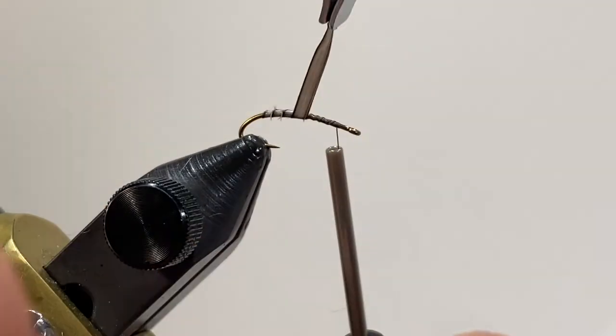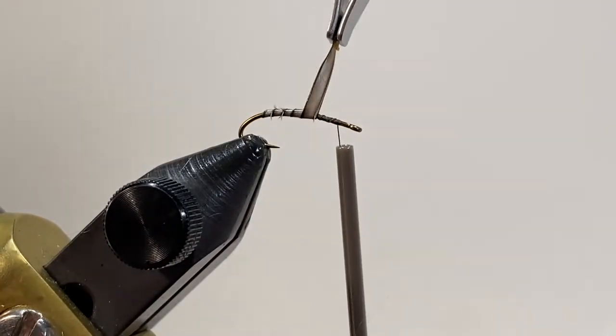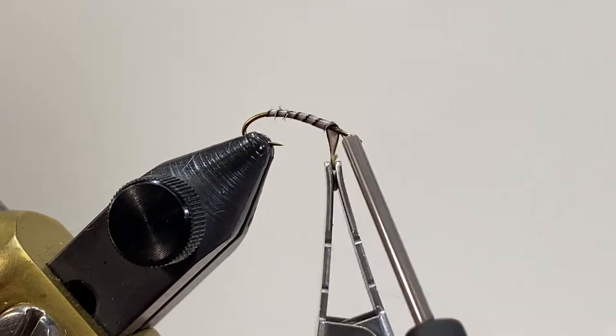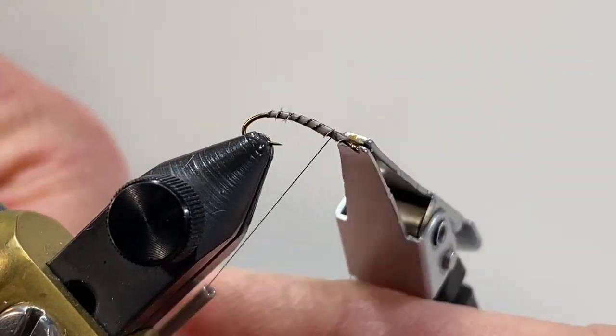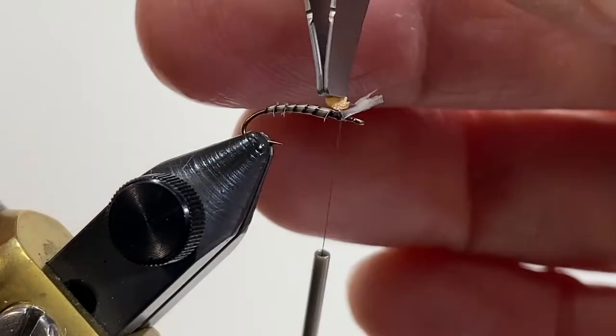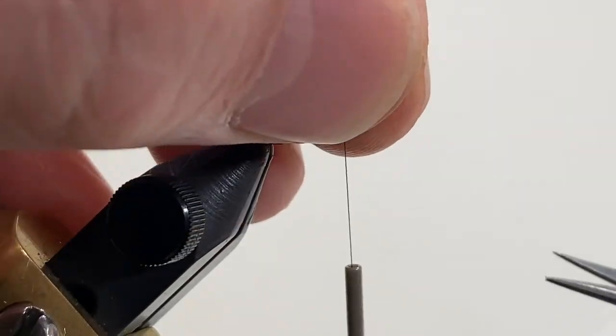You'll see a beautiful rib form, which is perfect to imitate a midge body. If you don't have a lot of room to work with on the Biot, bring it up, tie it off, and then trim off excess.